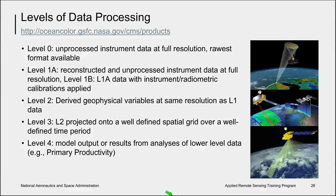Satellite data are organized in a variety of ways reflecting different spatial, temporal, and parameter groupings, and certain terminology has arisen to describe these conventions. Level 0 data are unprocessed instrument data at full resolution with communication artifacts removed. Level 1A data are reconstructed, unprocessed instrument data at full resolution, time-referenced and annotated with ancillary information including radiometric and geometric calibration coefficients and georeferencing parameters computed but not yet applied. Level 1B data are Level 1A data that have had instrument and radiometric calibrations applied.